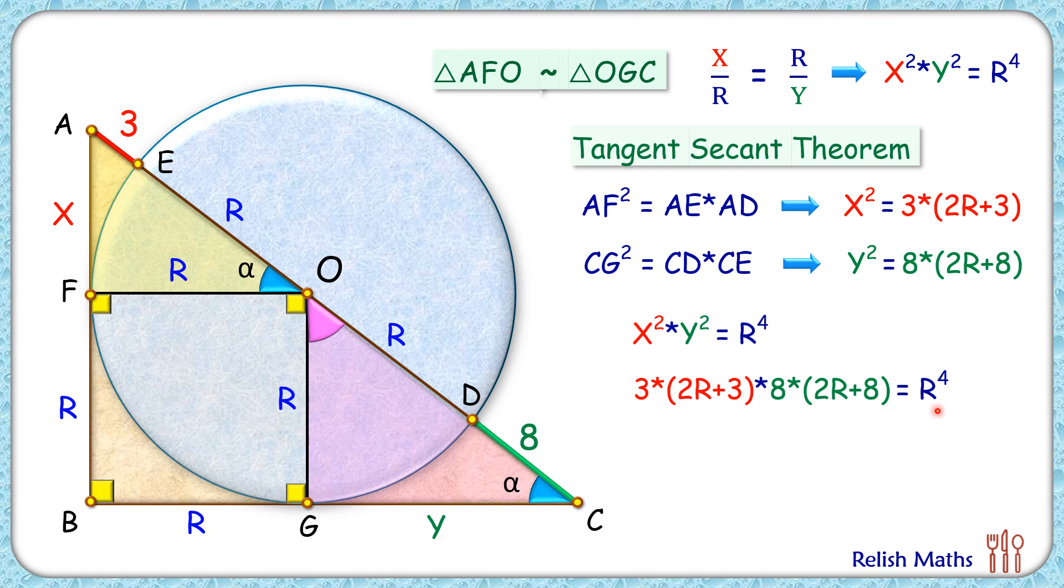Opening up the brackets and simplifying, we'll get a biquadratic in terms of R. Given that R is an integer, this integral root has to be a factor of the constant term. So whatever is the value of R, that's a factor of 576.